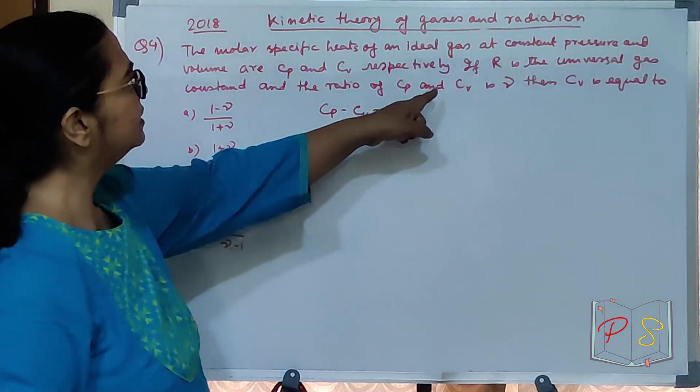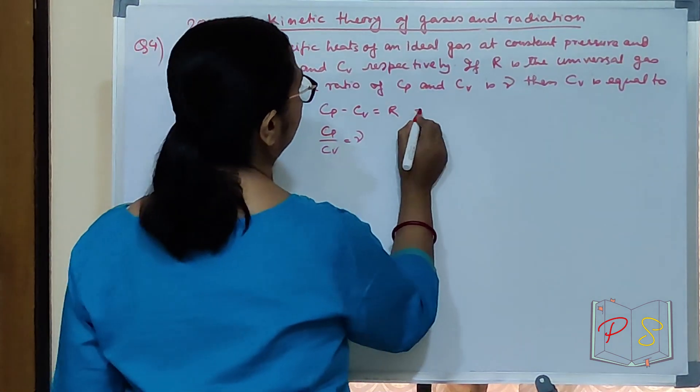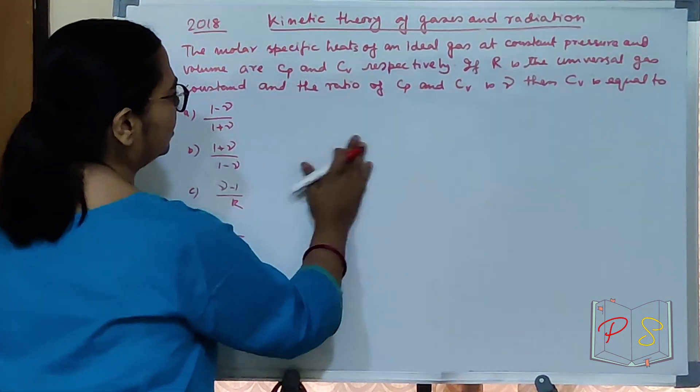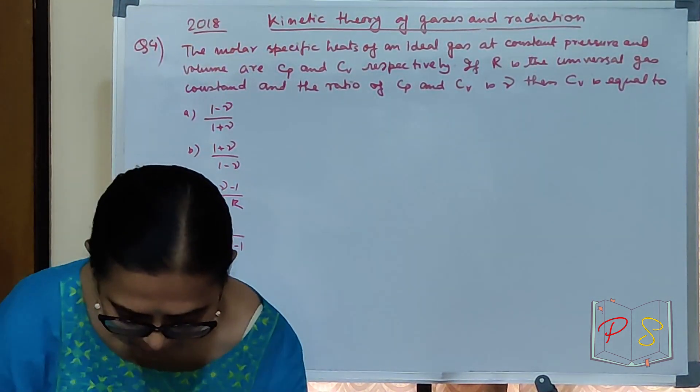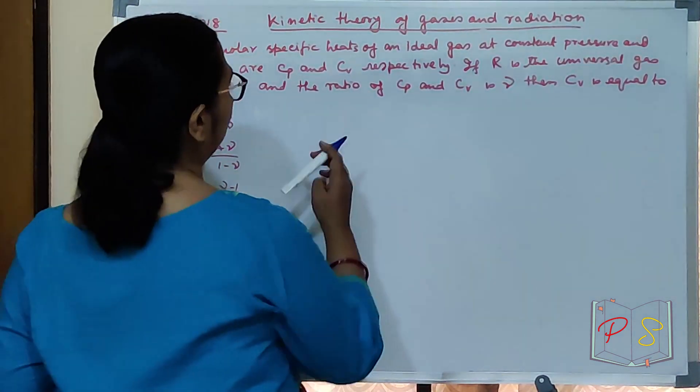What do we need to find? Cv. To find Cv, divide this by Cv. I'm going to change color now. Cp minus Cv equal to R and Cp by Cv equal to gamma.